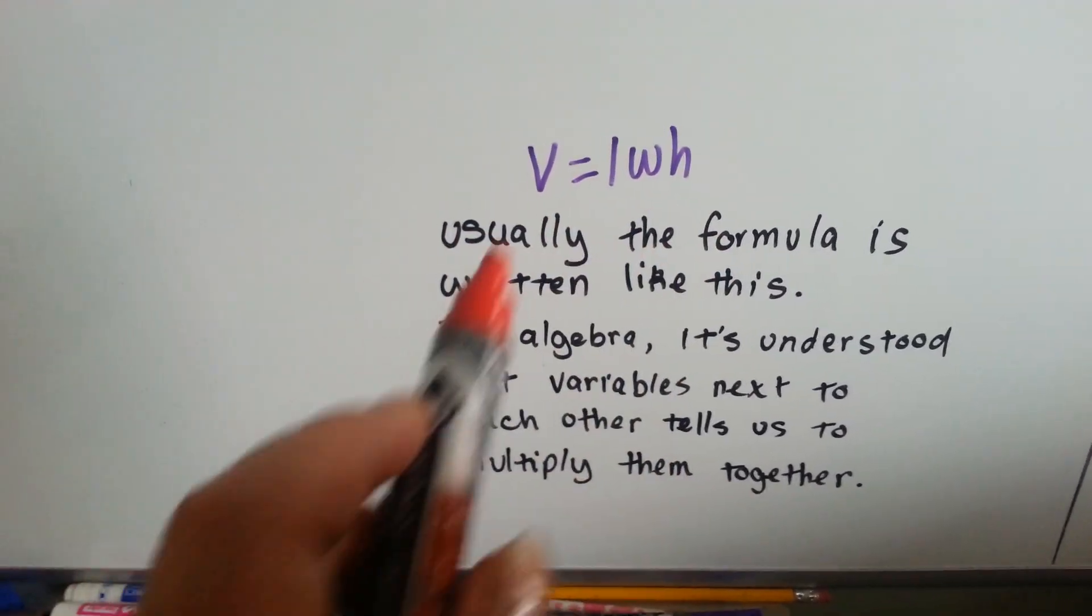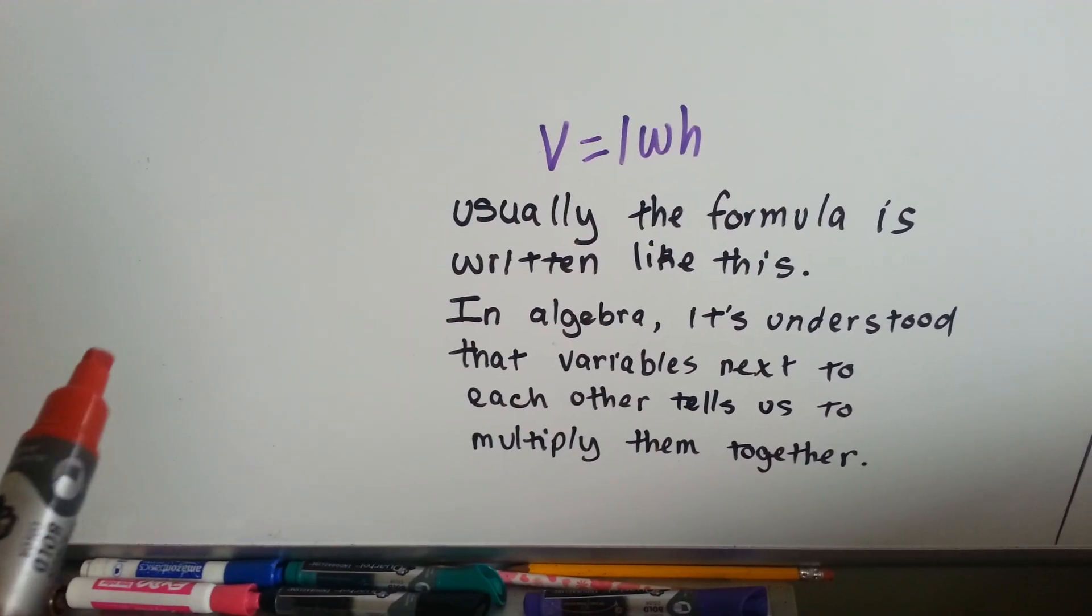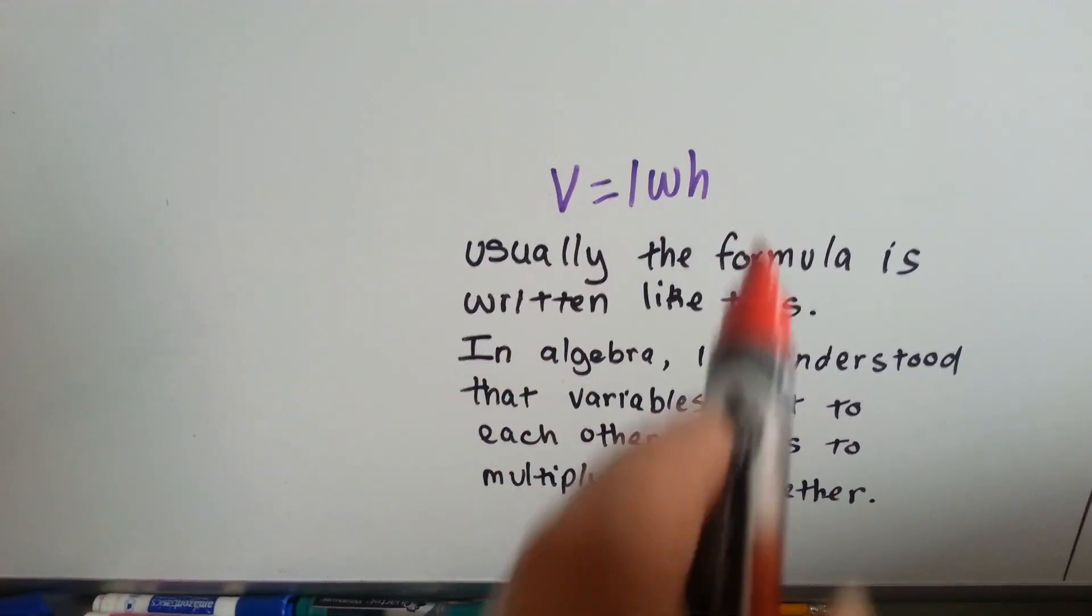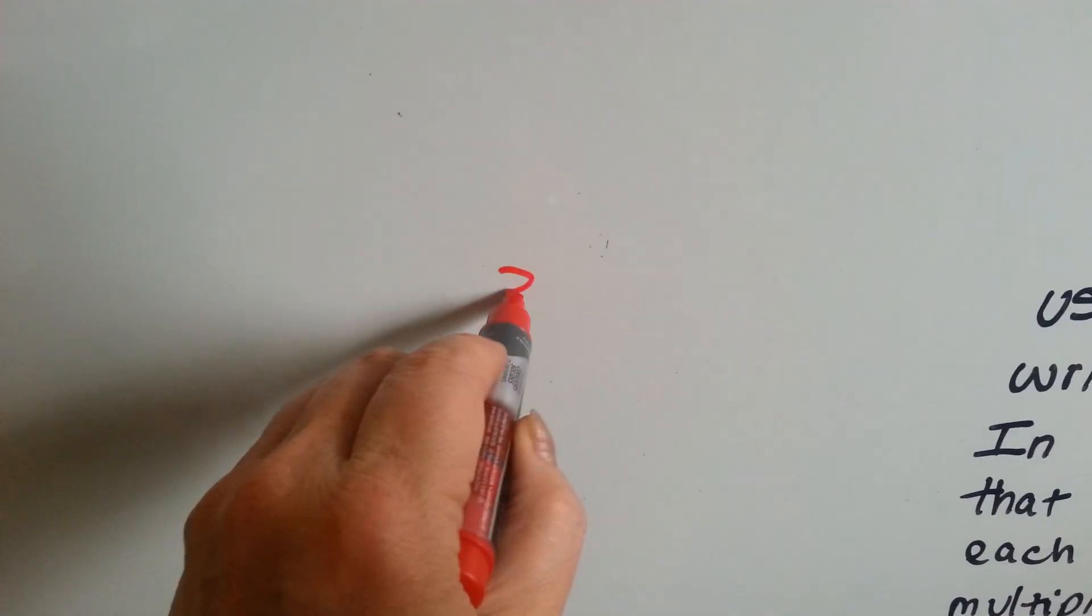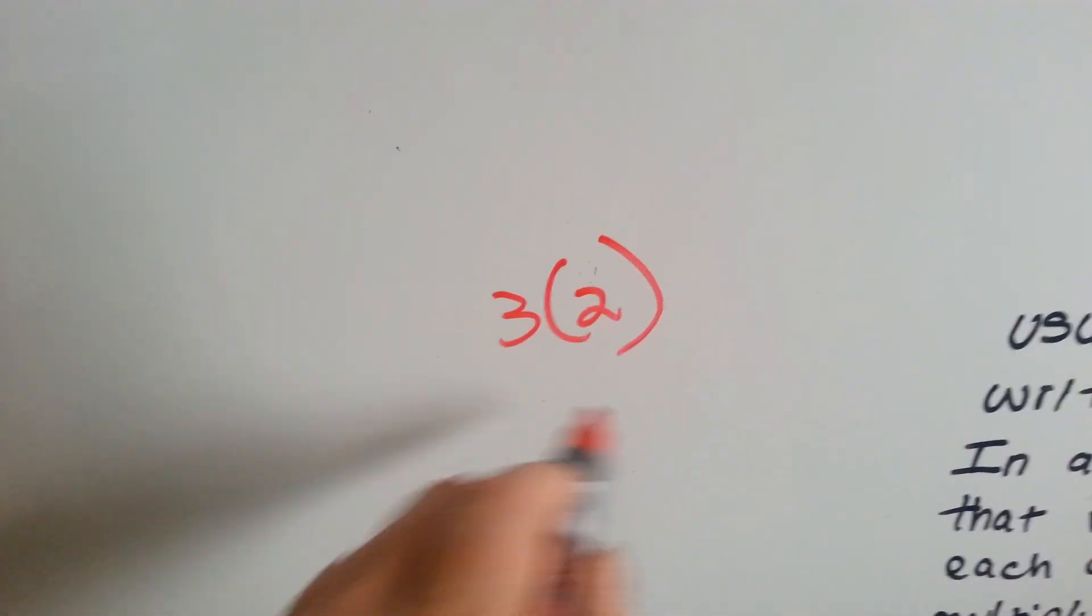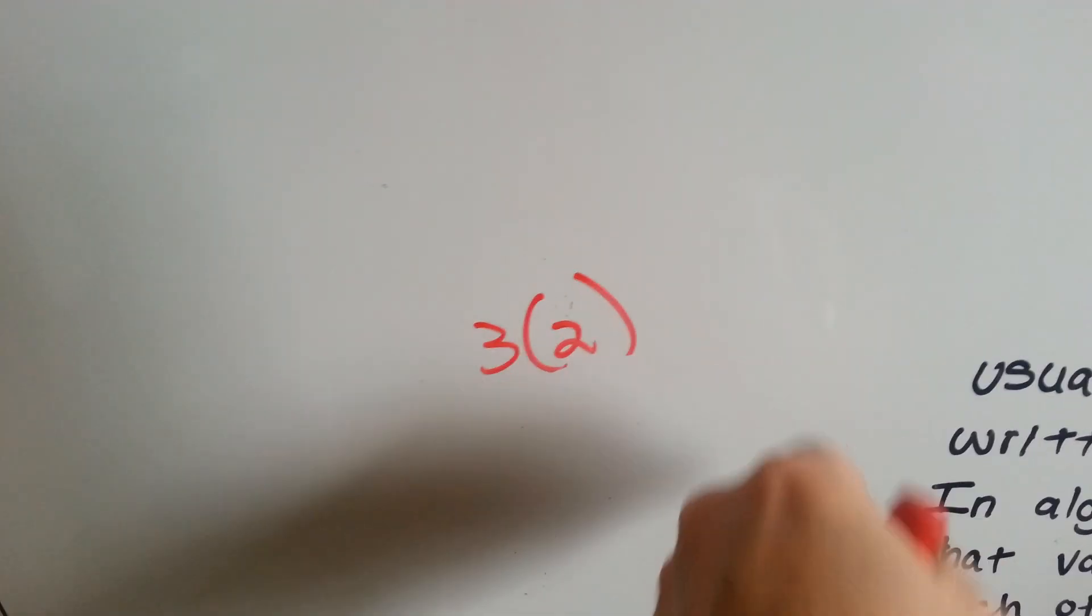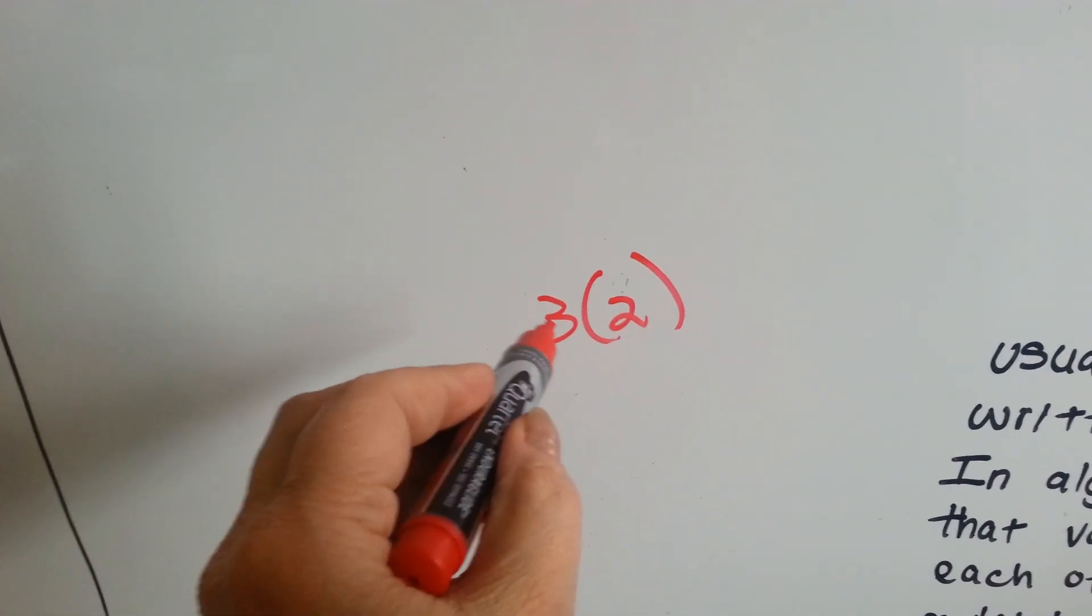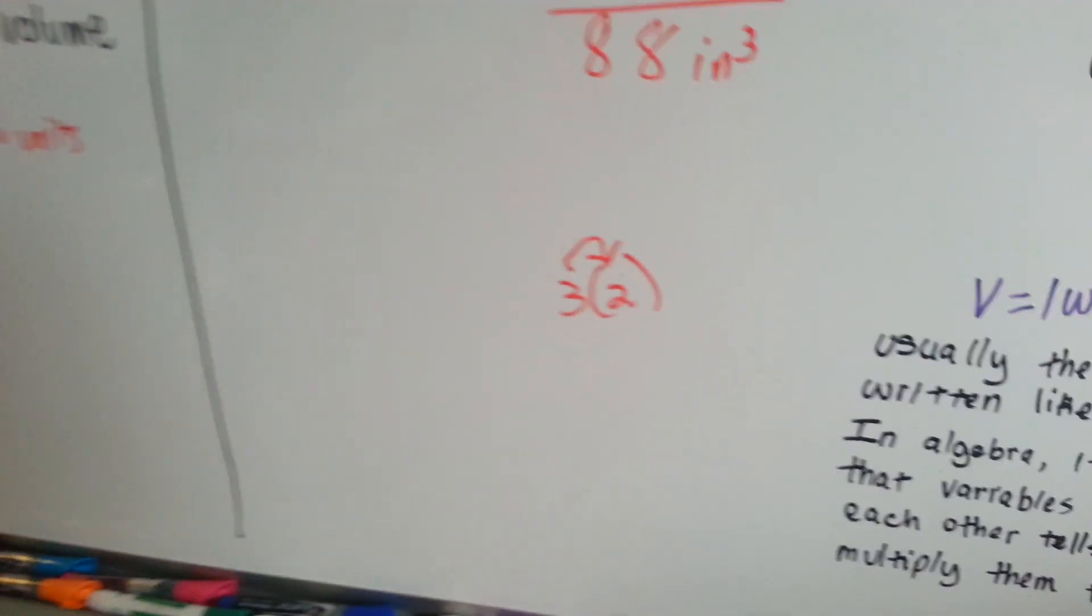When we're working in algebra, it's usually understood that variables next to each other means you multiply them. So you're going to start seeing them like this, with no multiplication sign in between them. You might even see numbers like this. That means to multiply. There's no multiplication sign. You just know that when a number is next to a parenthesis, that it means to multiply it, and that would be 6.